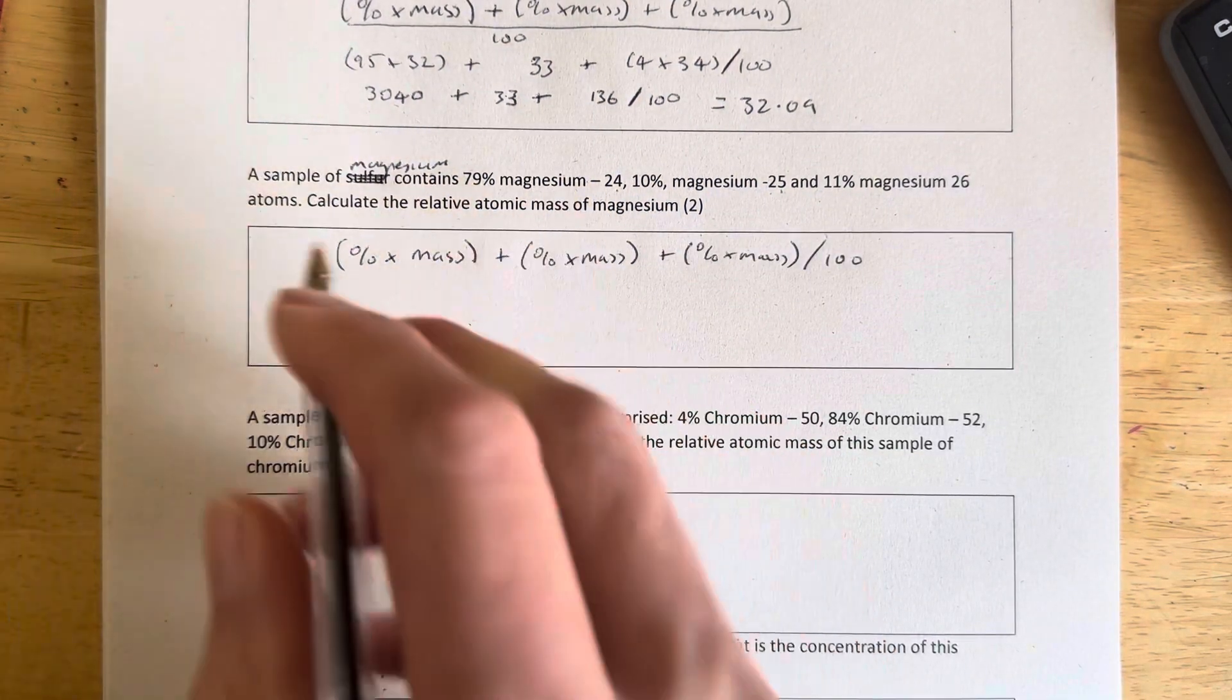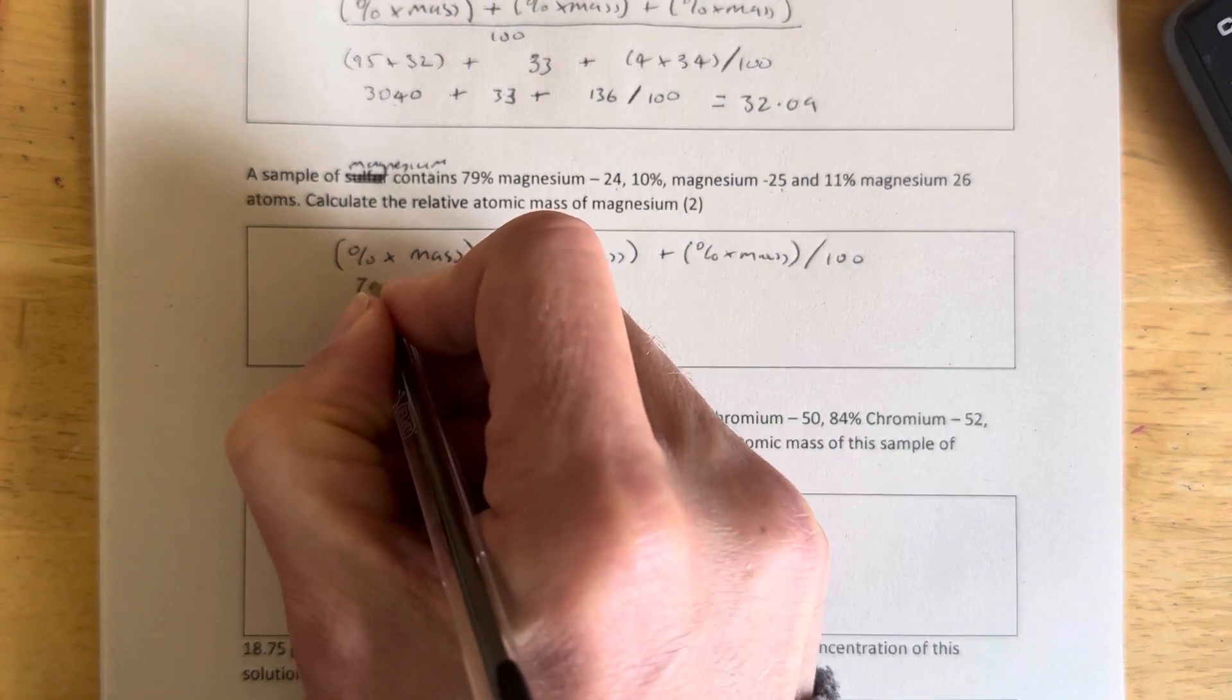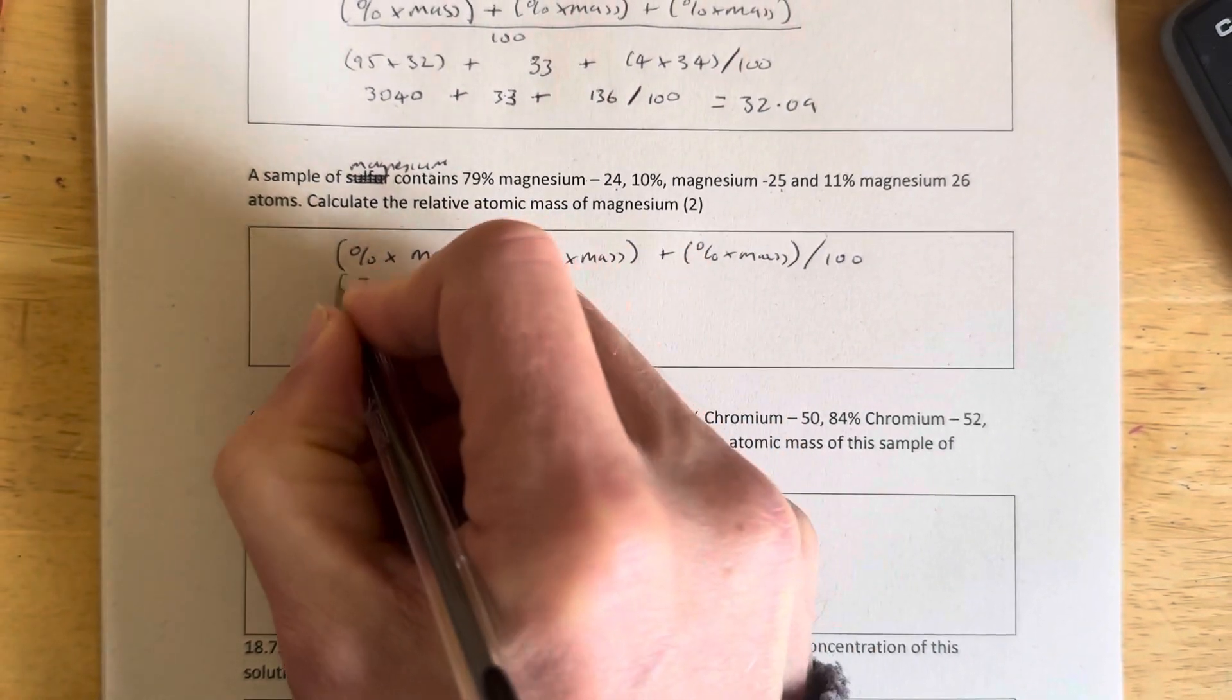So let's put some numbers in. 79% times magnesium-24. 79 times 24, stick it in brackets.